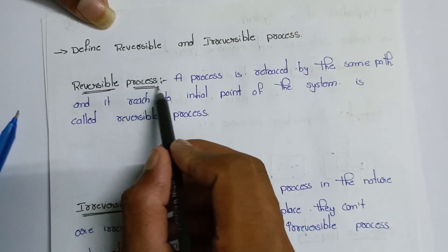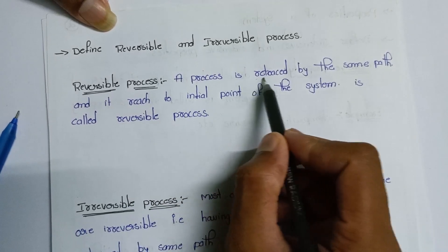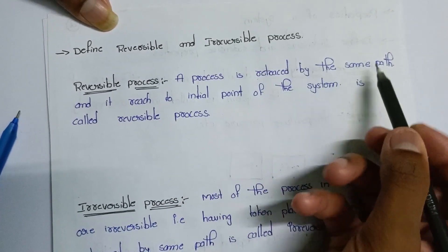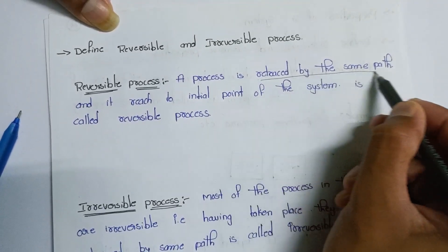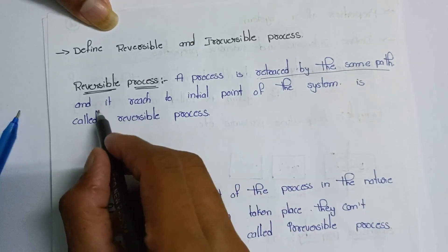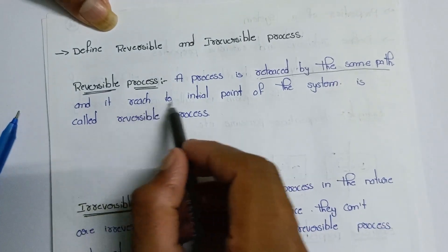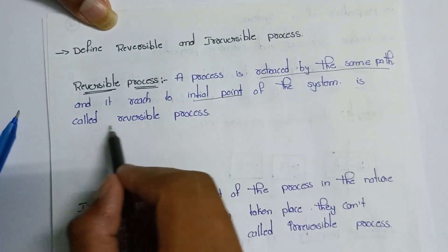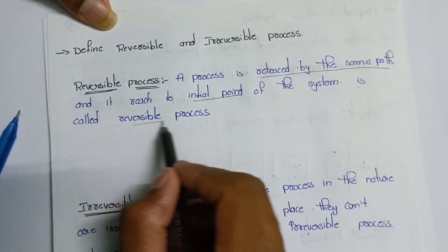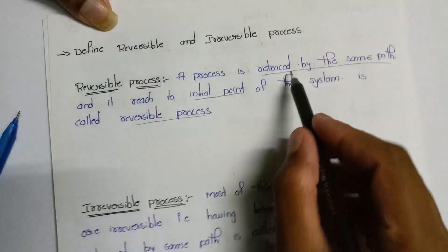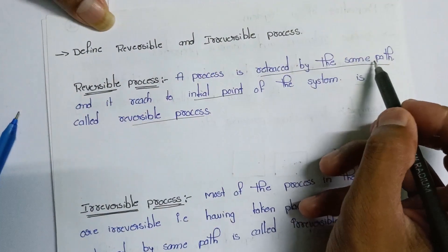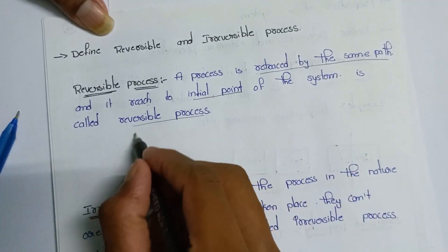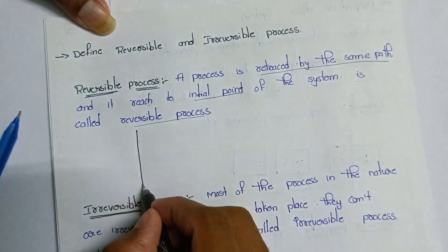A Reversible Process is one that is retraced by the same path and reaches back to the initial point of the system. This is called a Reversible Process.